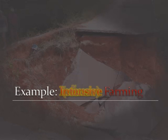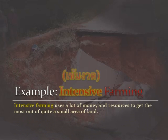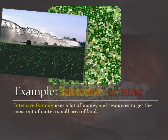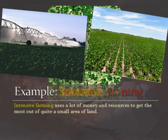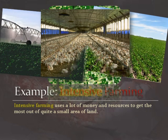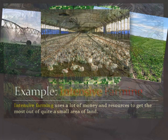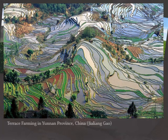One example we're going to look at is intensive farming. Intensive farming is putting a lot of money and resources into getting the most out of quite a small area of land. Here you can see various different types of intensive farming: intensive crop farming and intensive animal farming, and you can see that intensive farming changes the landscape quite significantly.